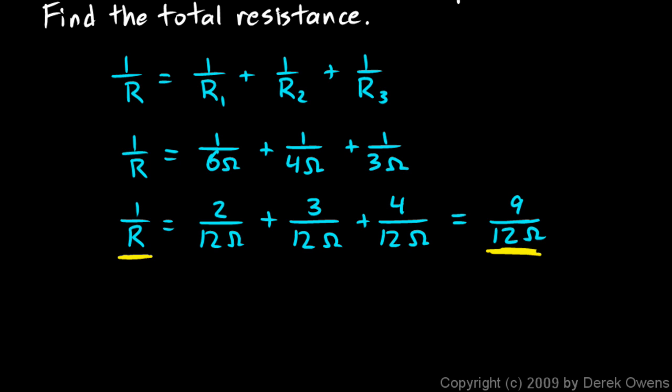Instead of 1 over R, I'll just have R over 1 on the left, and then over here I'll have 12 ohms over 9. And 12 ohms over 9 is the same as 1.33 repeating ohms. I'll just round it to 1.33. That's my answer, that's the total resistance of all three of those connected in parallel.